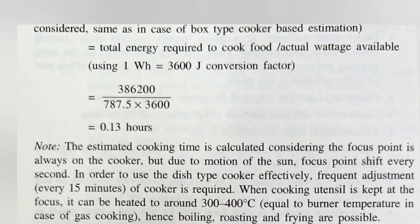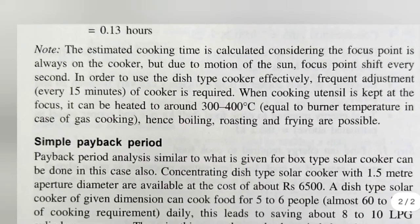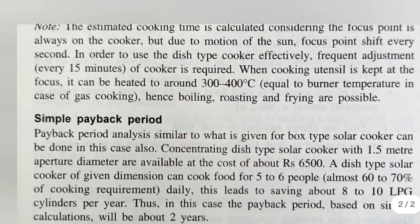However, due to the motion of the sun, the focus point shifts every second. In order to use the dish type cooker effectively, frequent adjustment is needed — specifically, after every 15 minutes you have to shift the focus point of the cooker. When a cooking vessel is kept at the focus, it can be heated to around 300 to 400 degrees Celsius, which equals the burner temperature in the case of gas cooking. Hence, boiling, roasting, and frying are all feasible.